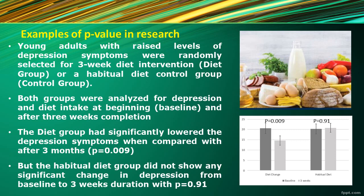In this way, it is decided by the help of p-value that the diet improved depression in the selected adults in that study.